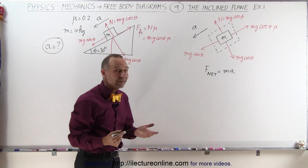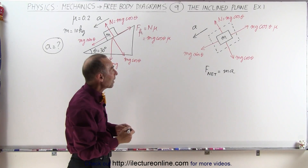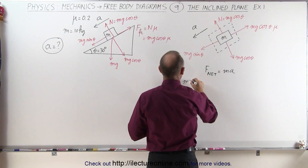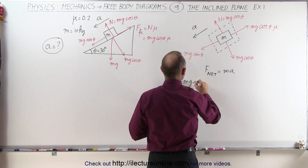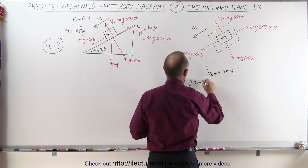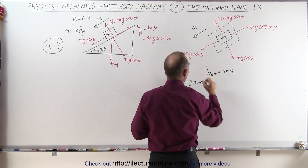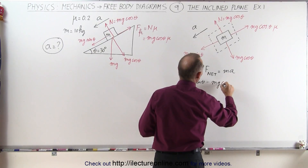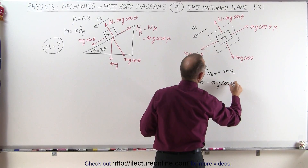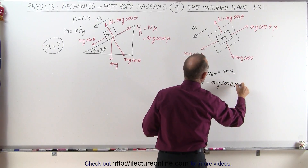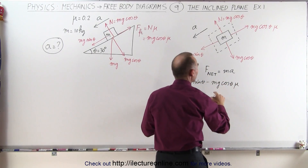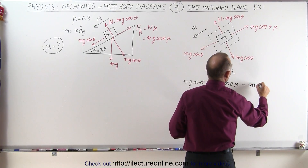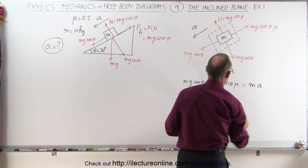What that means is that the net force is mg sine theta — the force in the direction of acceleration — minus mg cosine theta times mu, which opposes the acceleration, and this is equal to mass m times acceleration.